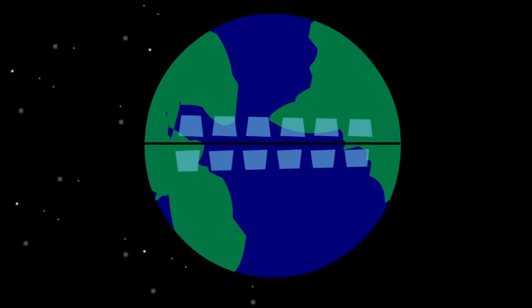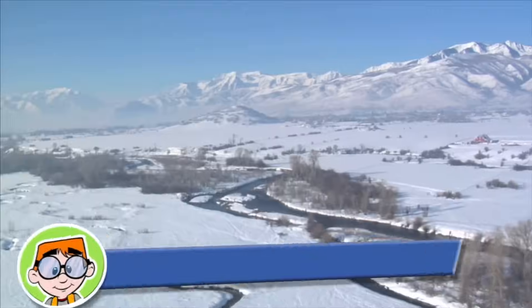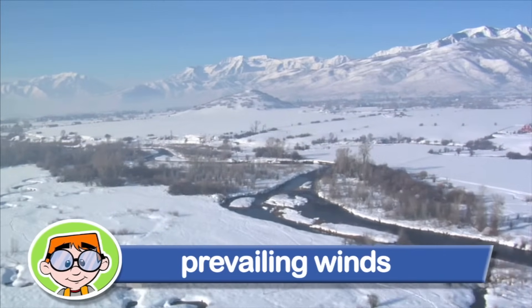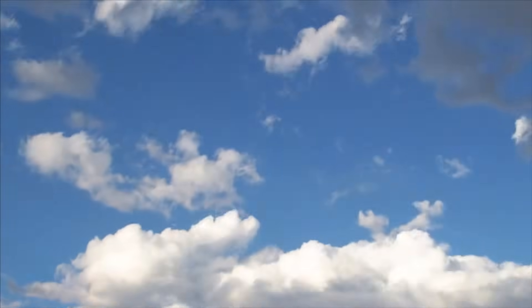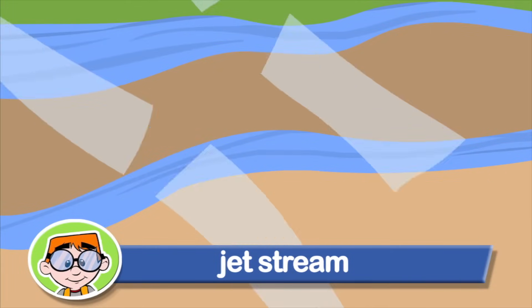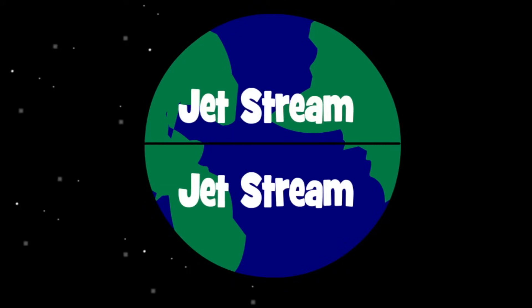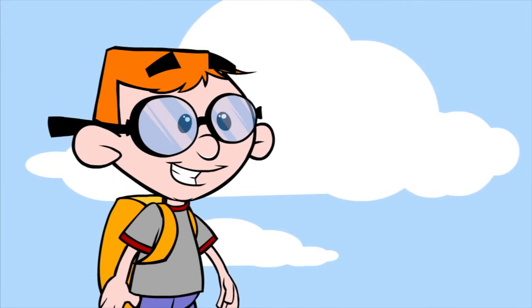The warm air that moves away from the equator travels towards the north and south poles, where it is cooled off. It's called the prevailing winds, because they always blow. Very high in the atmosphere, there's a large, fast-flowing stream of air that blows above the surface of the earth. It's called the jet stream. There's one jet stream over each hemisphere. That's really cool!